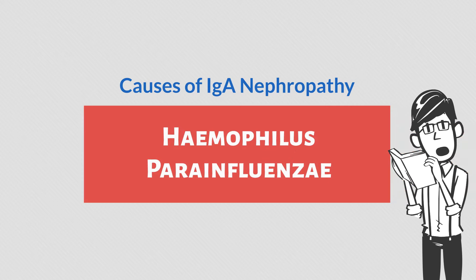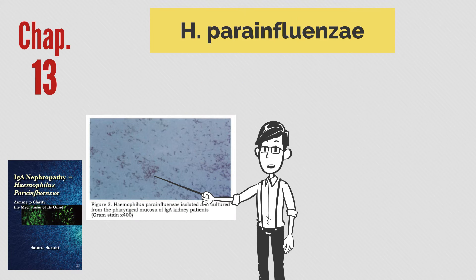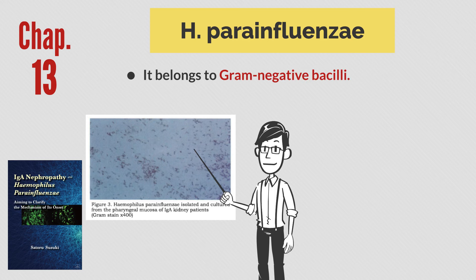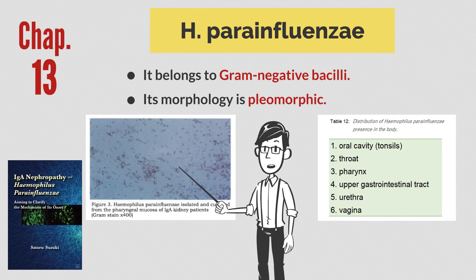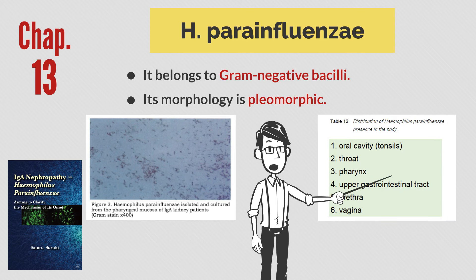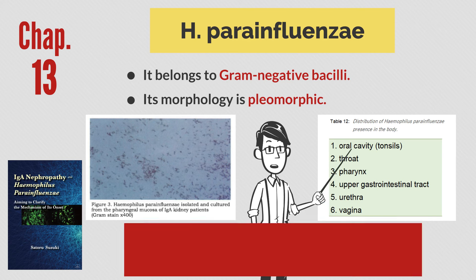Let's take a look at this bacterium, which is described in Chapter 13. H. para-influenzae belongs to the gram-negative rod family, and its morphology is polymorphic depending on the environment. The sites of presence include the oral cavity, throat, pharynx, upper gastrointestinal tract, urethra, and vagina.